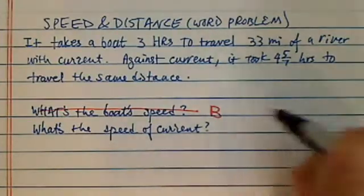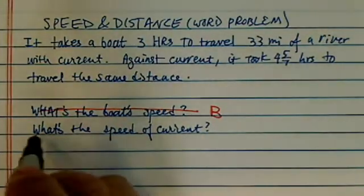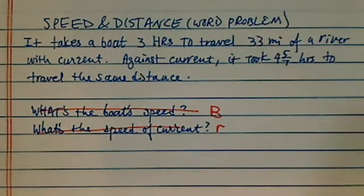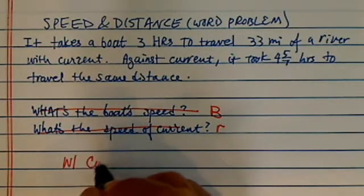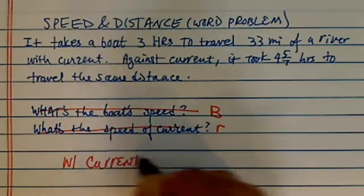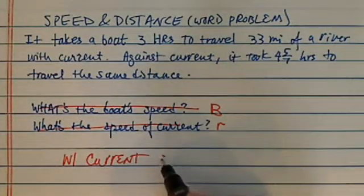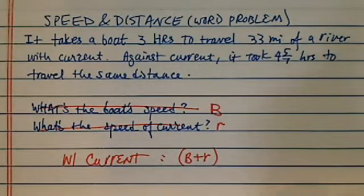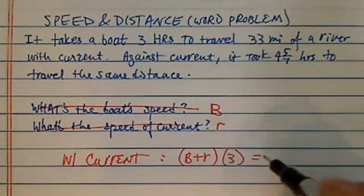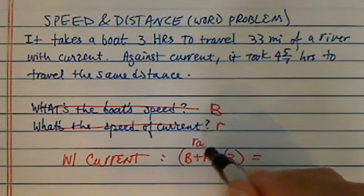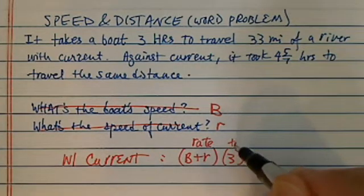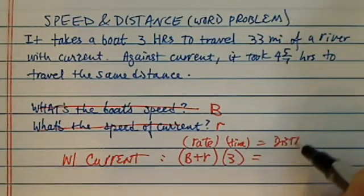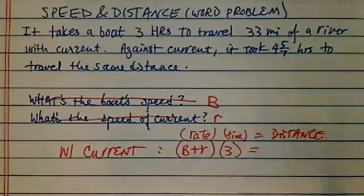If we assume that boat speed is b, and we assume the current speed is r, then with the current our speed is faster, so it's b plus r. And since we took three hours, this is the rate times time, which is equal to distance.